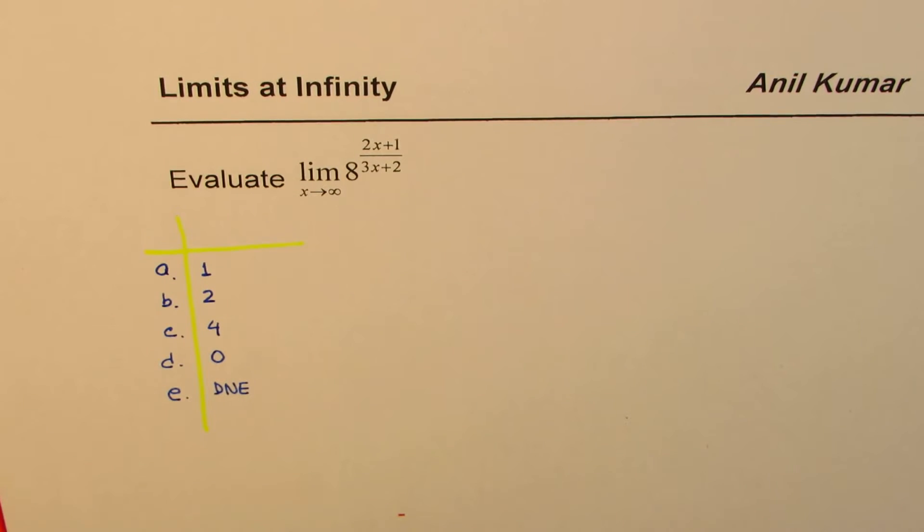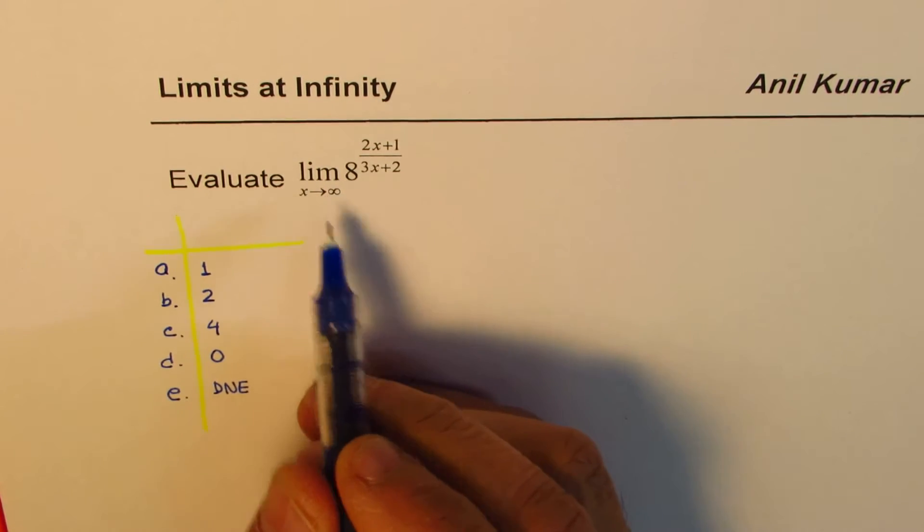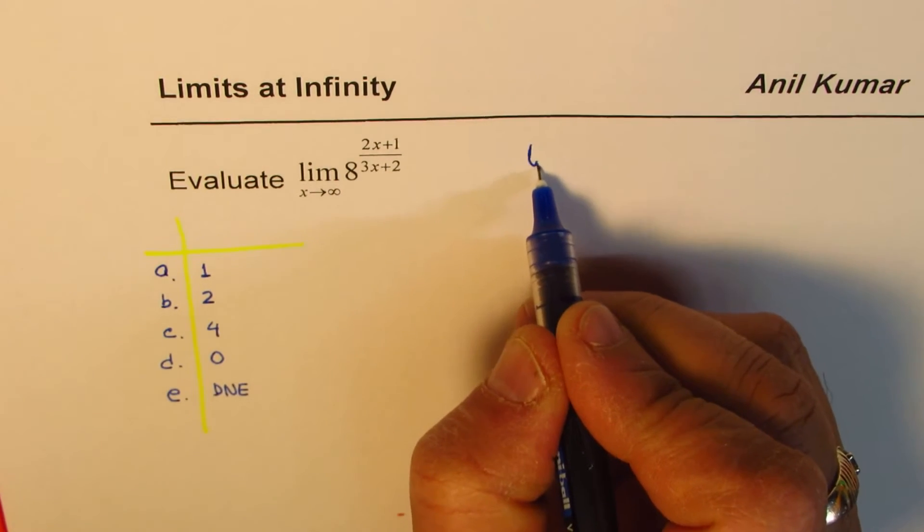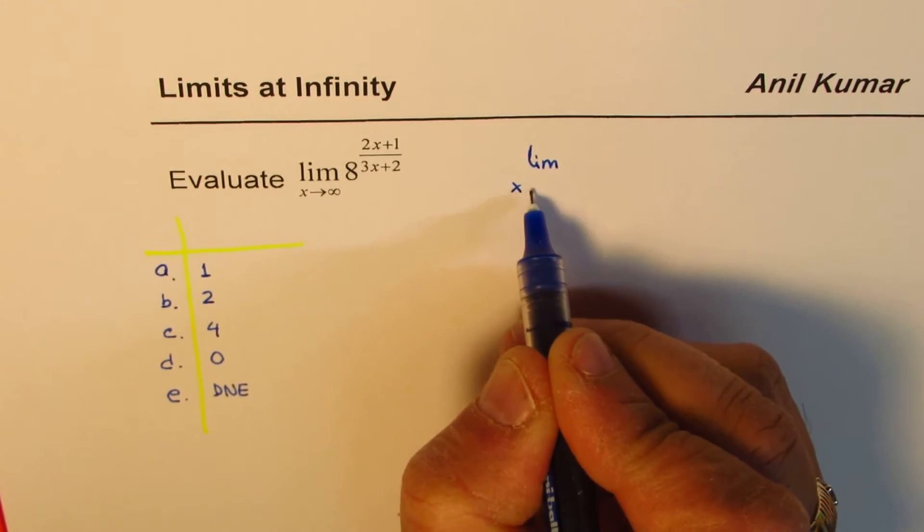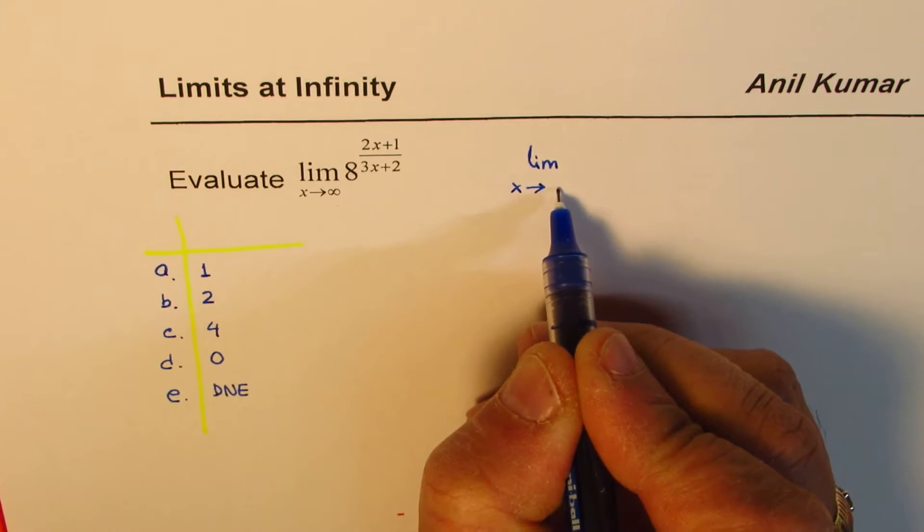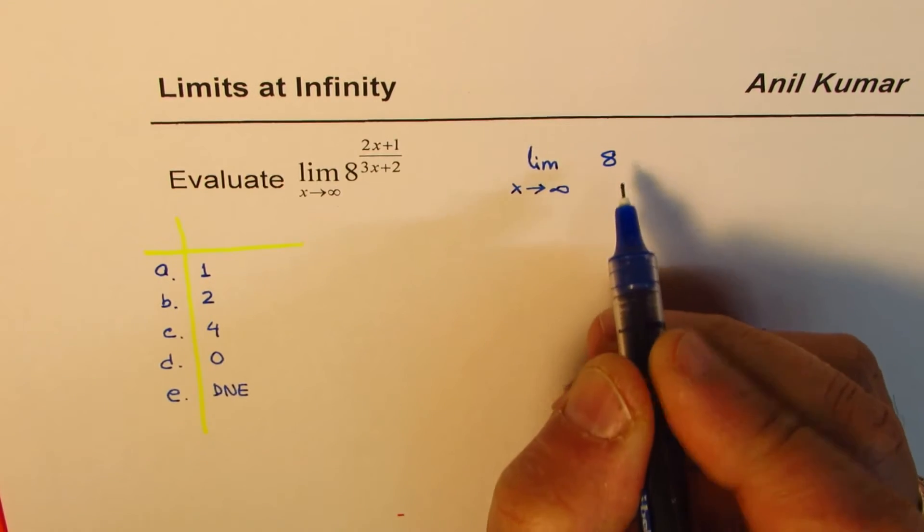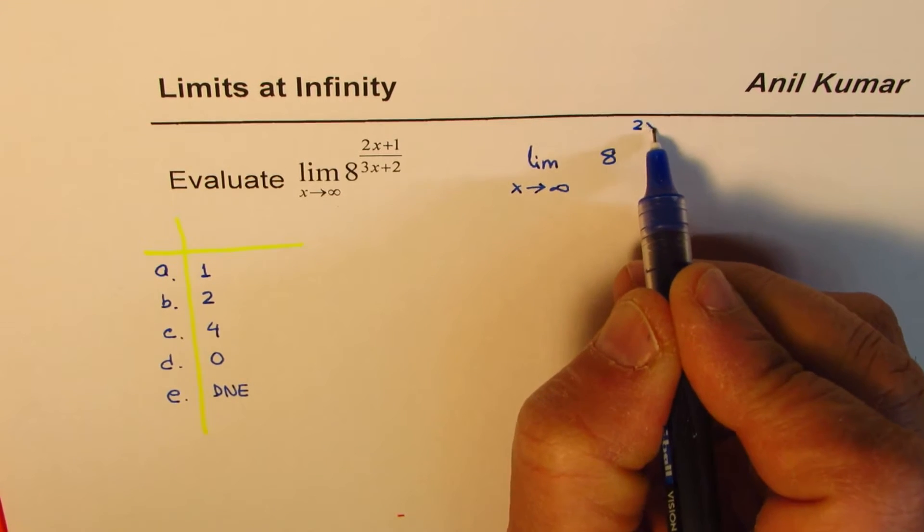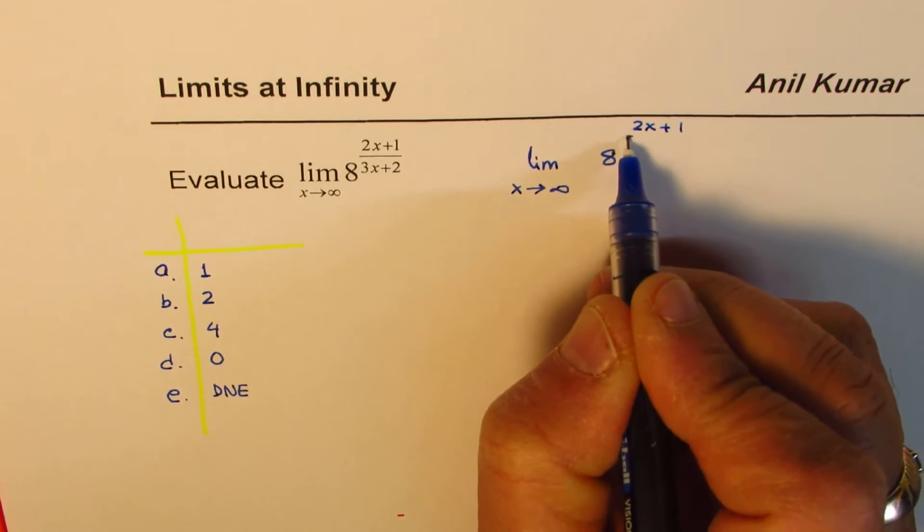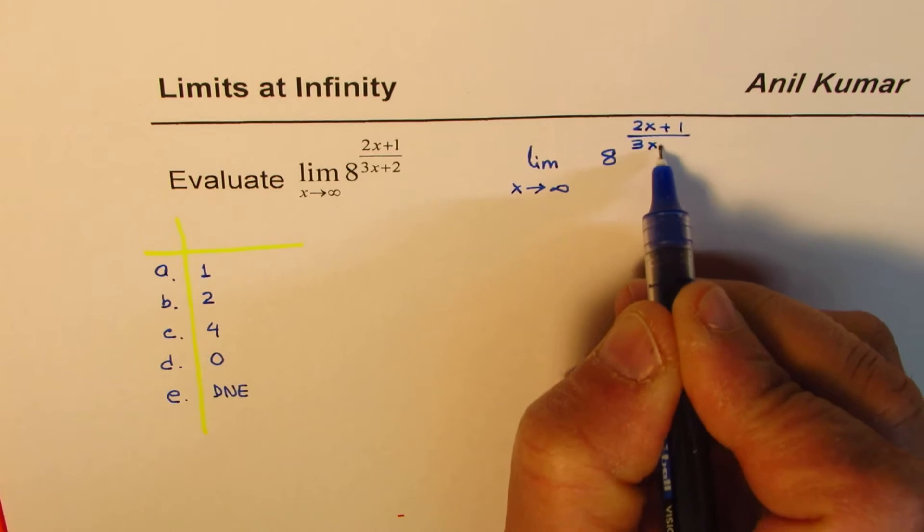Here is my solution. We need to work on limit x approaches infinity for 8 to the power of (2x+1) divided by (3x+2).